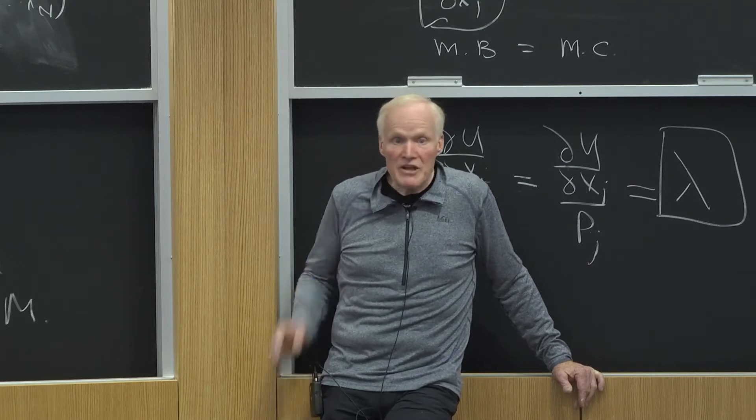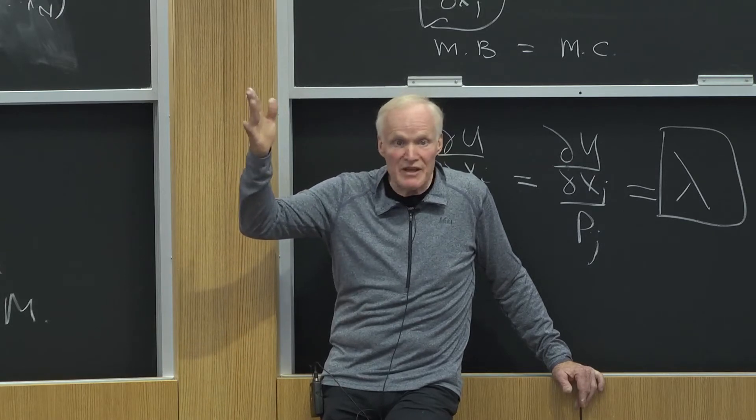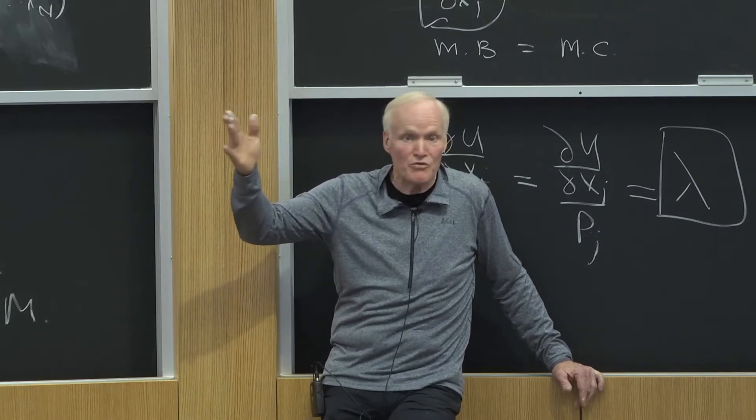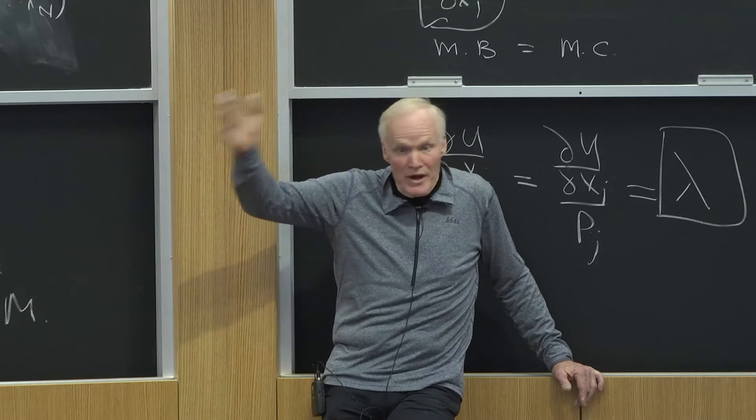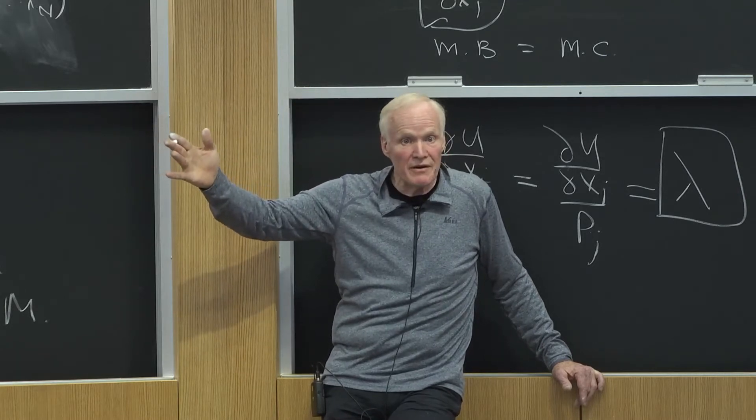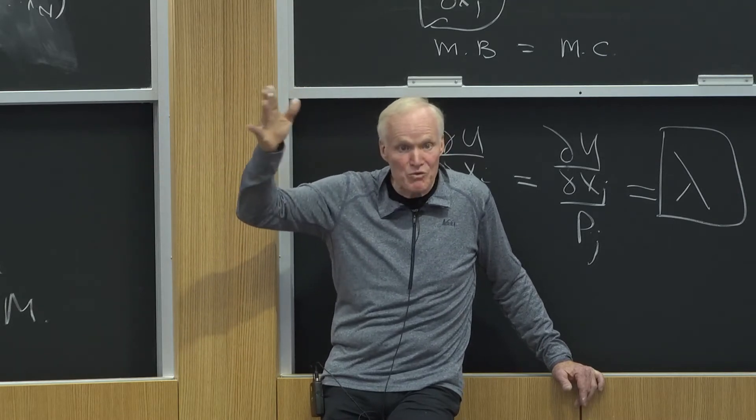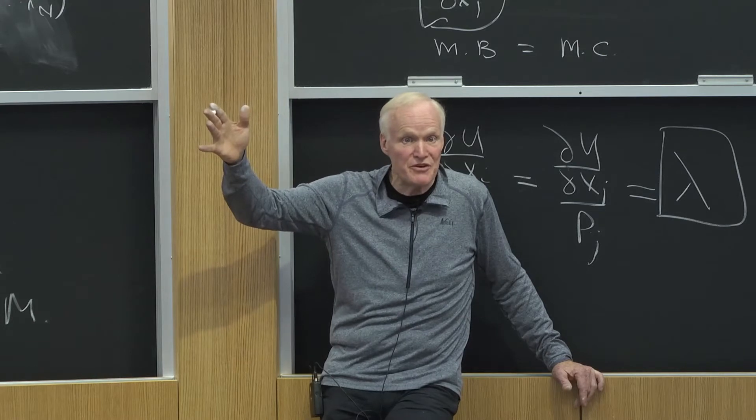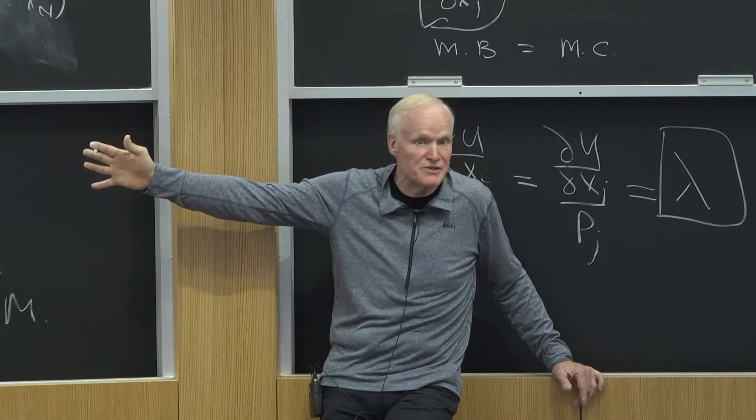So I know each extra unit of X was worth three and each less unit of Y was worth two. I can trade them off one against the other. I can observe his relative values of the different goods because I can observe the prices in the market.